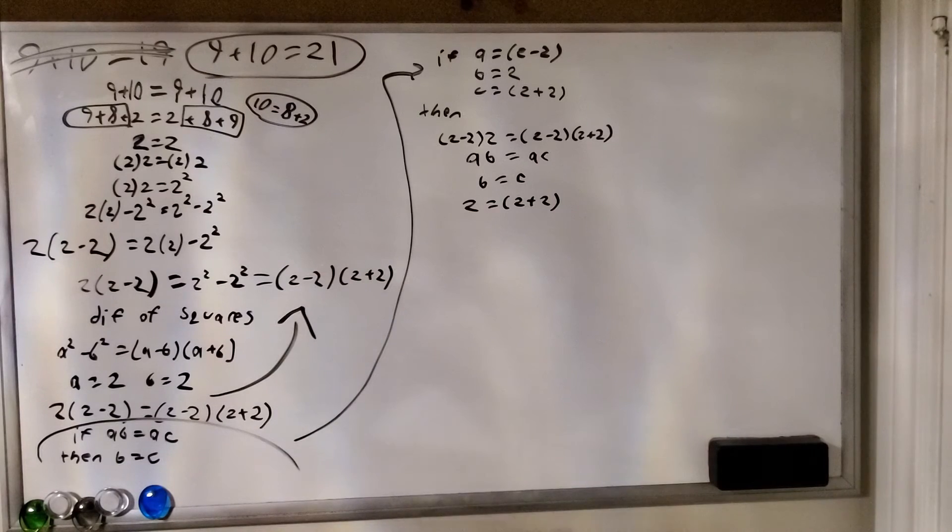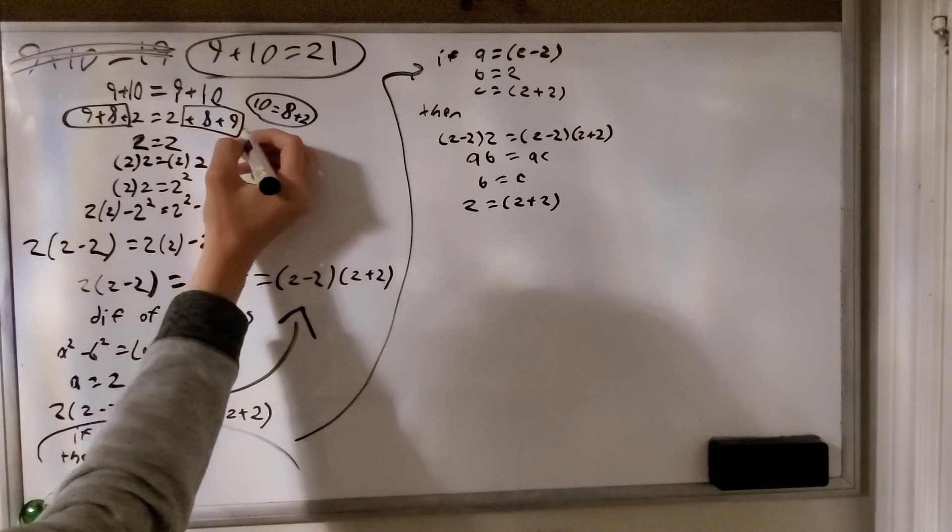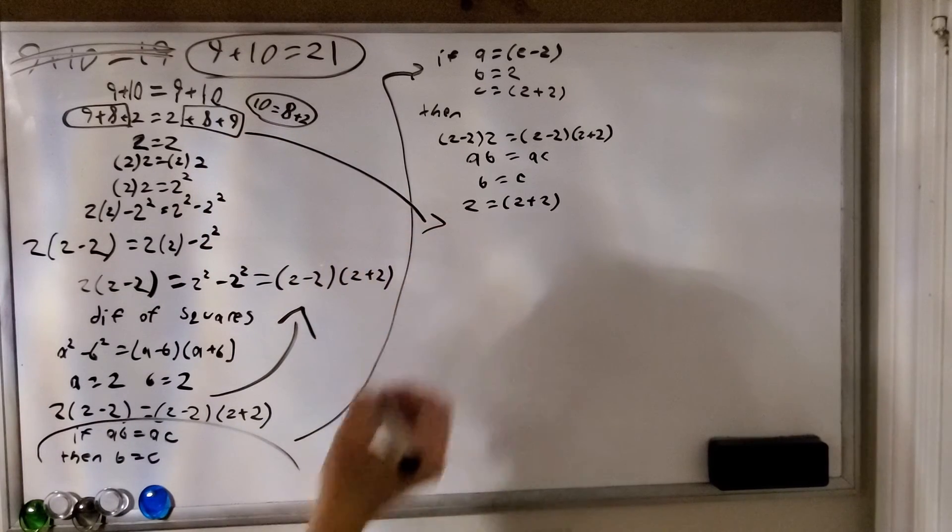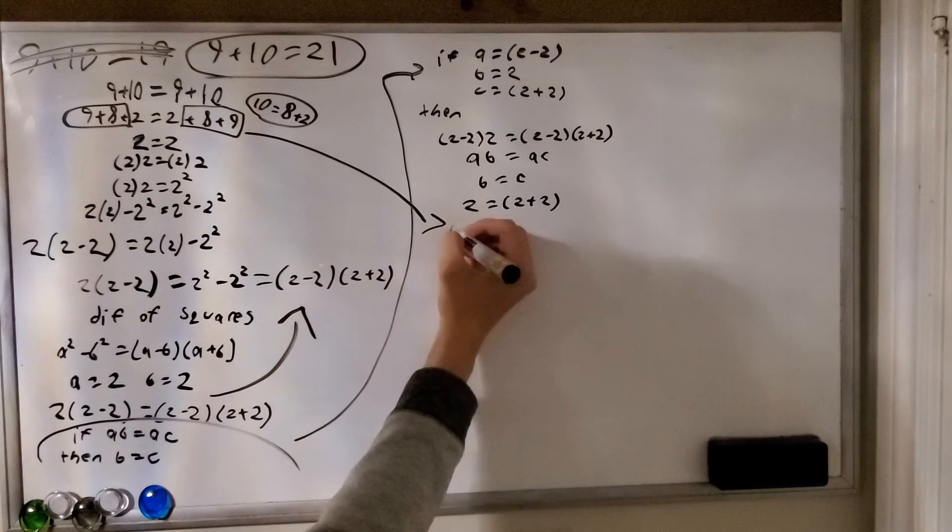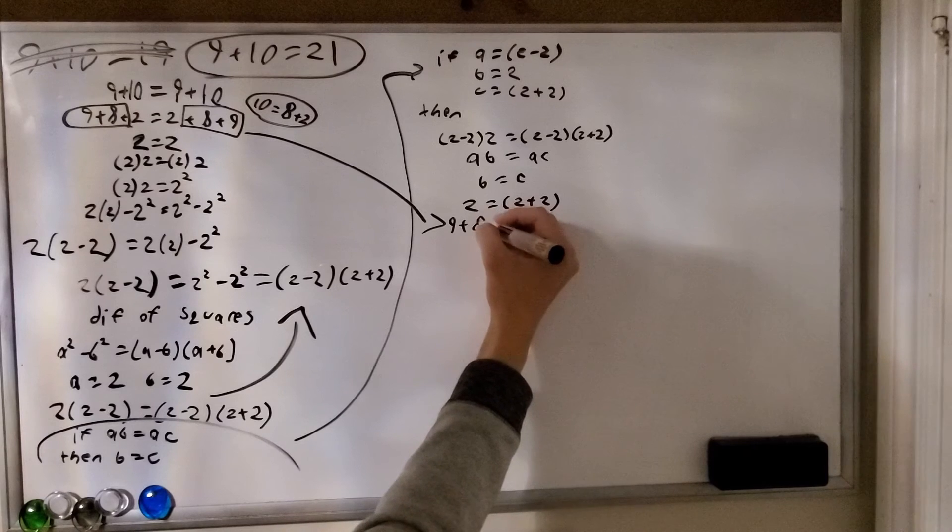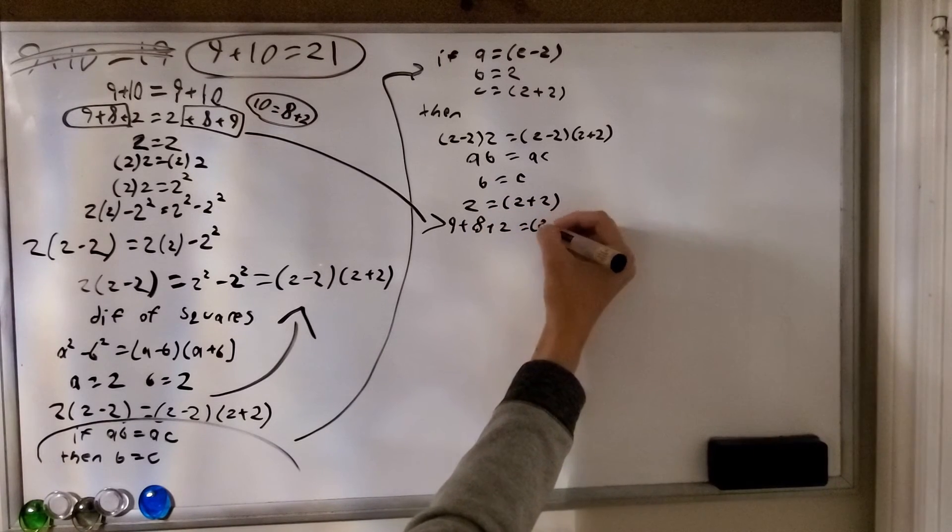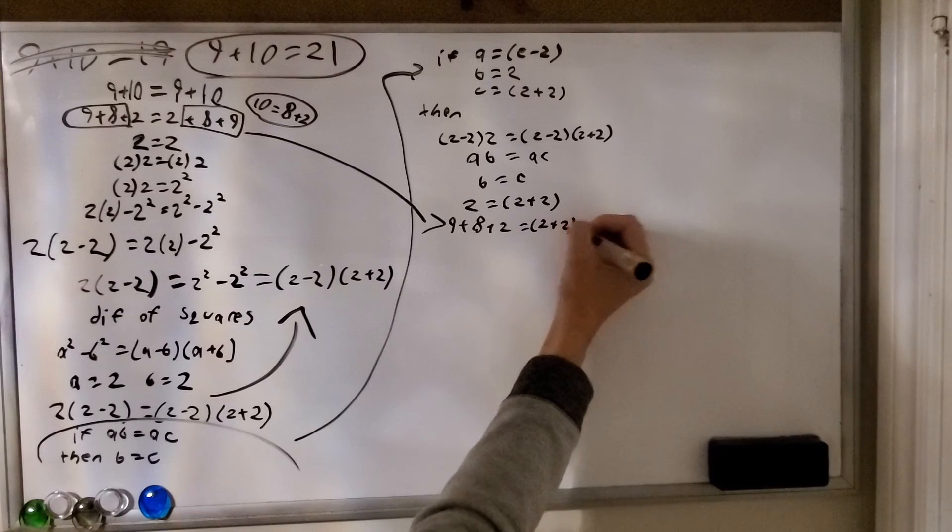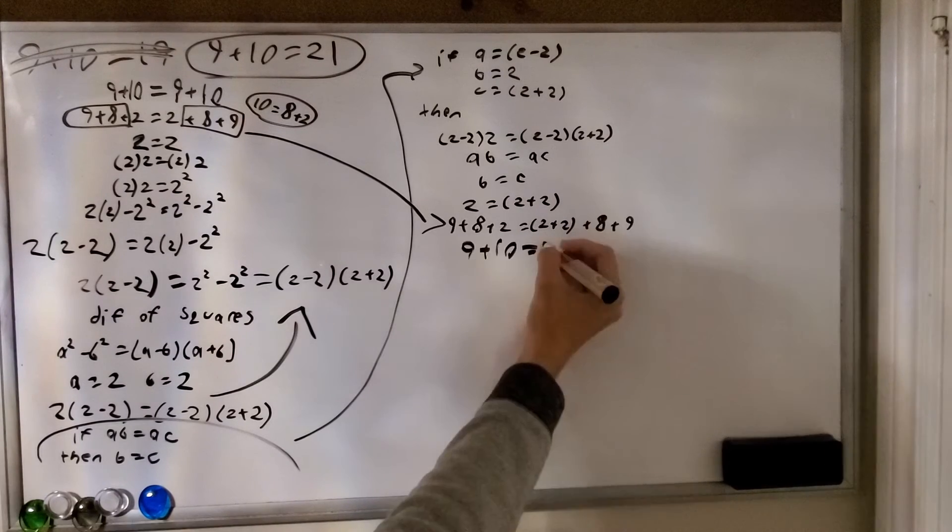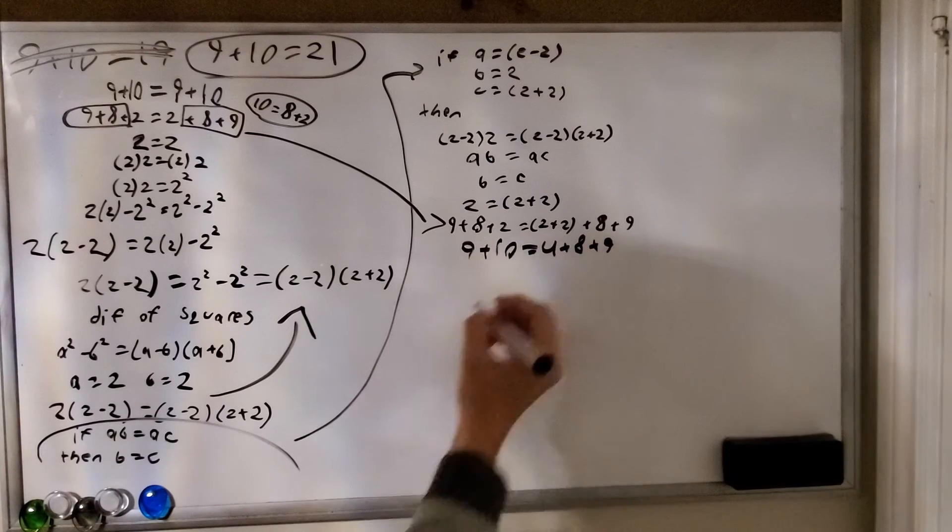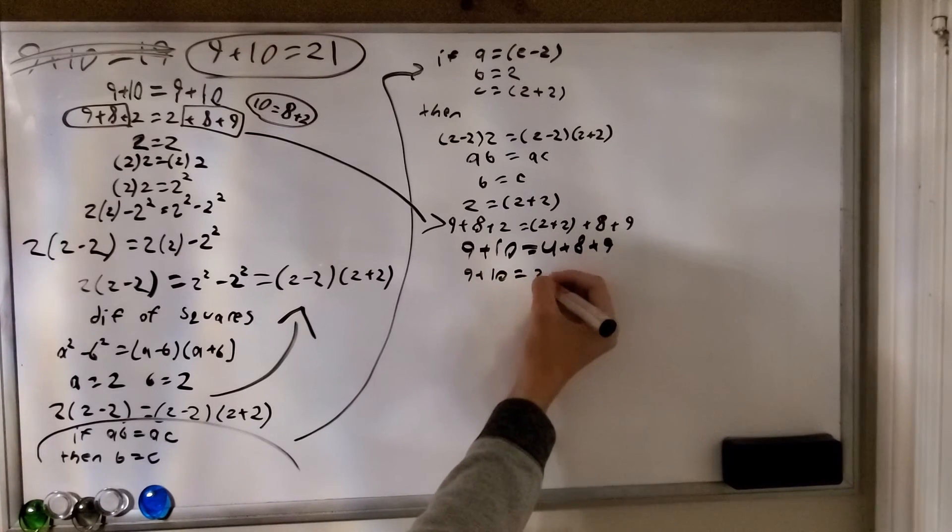Again, if you don't believe me, try out this equation with your own calculator with different numbers. So now we got 2 equals 2 plus 2. Now let's go back to the beginning of all this and take back that 8 plus 9. And we're going to add it back to both sides of the equation. And so this gives us 9 plus 8 plus 2 equals 2 plus 2 plus 8 plus 9. And if we simplify that down, we get to 9 plus 10 equals 21.